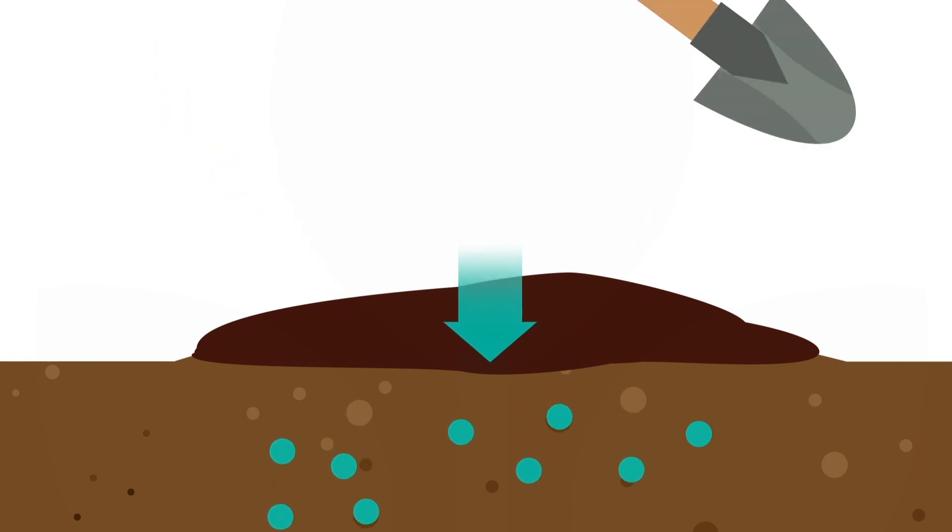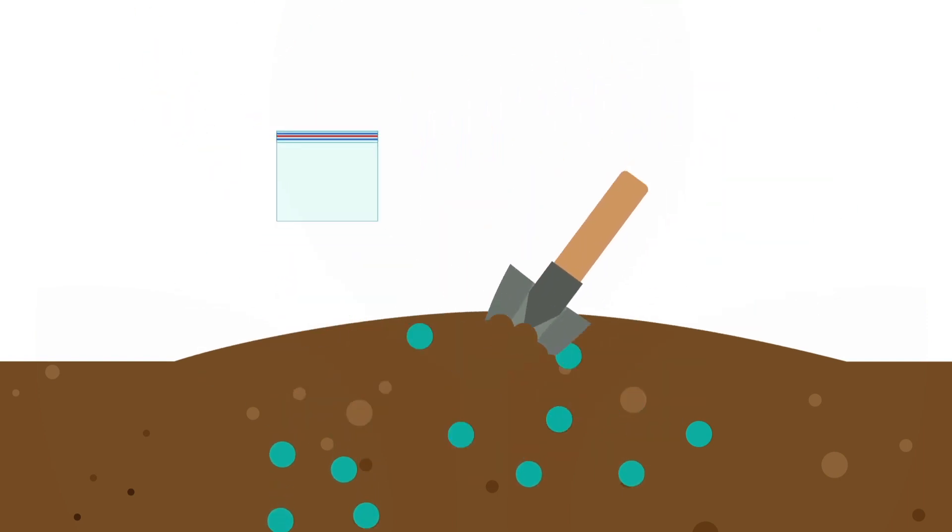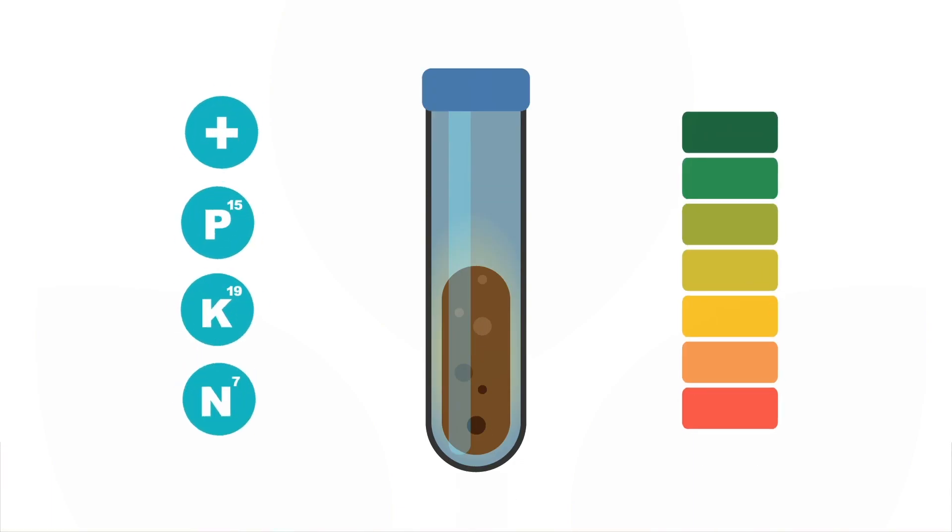To grow healthy fruits and vegetables, the best way to start the season is with a soil test. This will give you a baseline for where your soil is in terms of organic matter, pH, and nutrients, and will help you choose the best balance of nutrients to add to your soil.